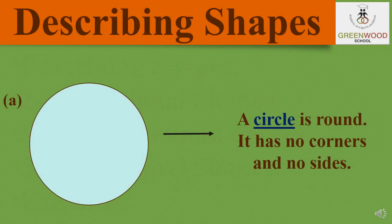The first topic is describing shapes. First, we will see some properties about the four basic shapes. Let's see one by one. The first one is circle. A circle is round. It has no corners and no sides.